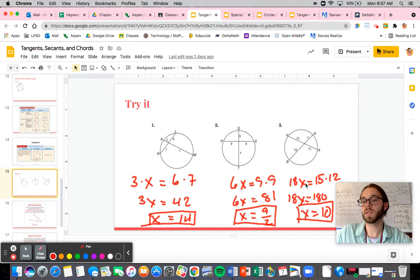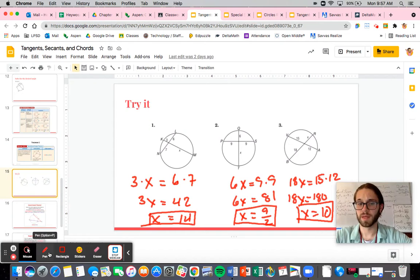Simple enough, right? So if you see the two inside, multiply them together, set them equal. In terms of difficulty, most of the problems are just really going to be like this. There's really not a whole lot of craziness that happens.